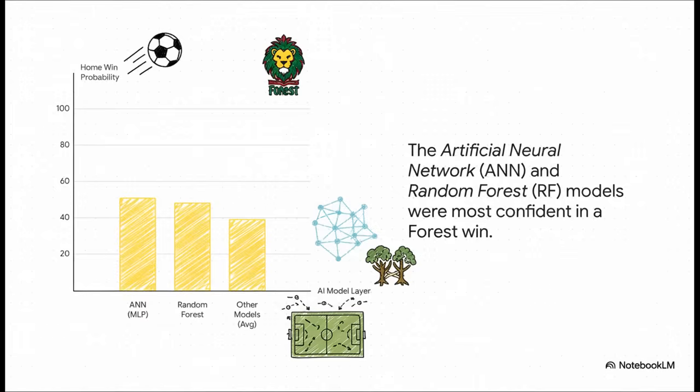So how did it do it? Well, Spectra isn't just one single AI. You can think of it like a committee of different models all arguing with each other. And if we look inside its brain, you can see that two of its most aggressive models, the neural network and the random forest, were the ones screaming for a Forest victory. These guys are really good at spotting complex patterns, and their confidence is what ultimately drove that incredibly accurate final prediction.